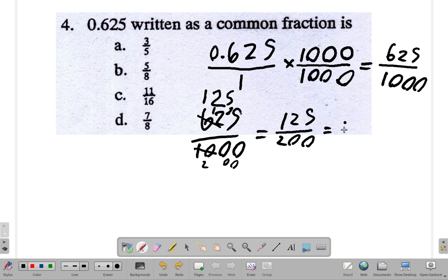5 into 125 is what? 5 into 12 is 2 times. Remain the 2. 5 into 25 is 5. So up here I have 25. Down here. 5 into 200. Well, 5 into 20 is 4. And you add a 0. So it's 40. 25 over 40.